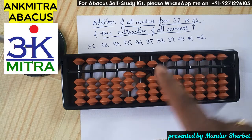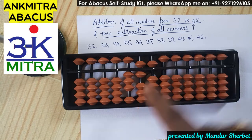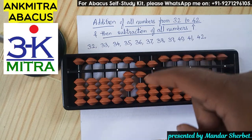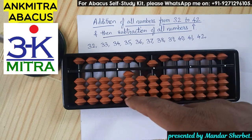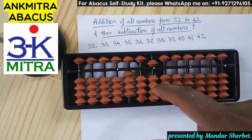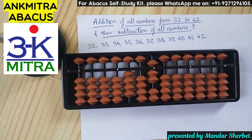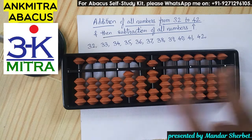The last number in the range is 42. I add 4 on the tens place using its big friend formula — minus 6 plus 10 — and then 2 on the units place can be done directly. The final addition of 42 is done. We have now finished the addition of all eleven numbers from 32 up to 42.